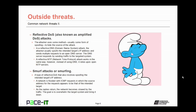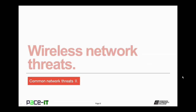Not very common anymore, but you still need to know about them, are SMURF attacks, also known as SMURFing. It's a type of reflective denial of service attack that also involves spoofing the intended target's IP address. A network is flooded with ICMP requests in which the source address appears to be that of the intended target. As the replies return, the network becomes slowed down by the traffic. The goal is to overwhelm the target system and bring it down.